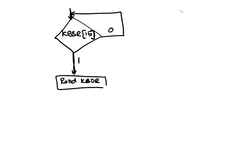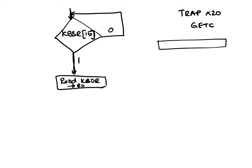This is exactly what trap x20 (GETC) does — it reads KBDR and puts the result into register R0. This form of IO, where we repeatedly check the status bit, is called polling.